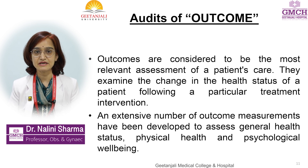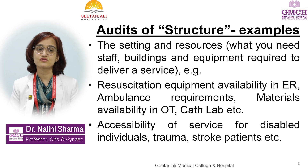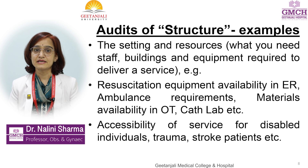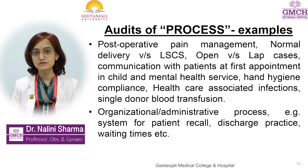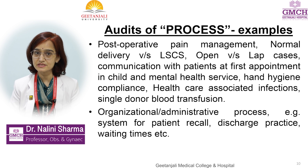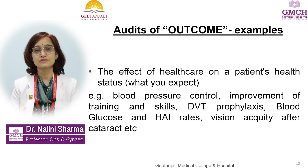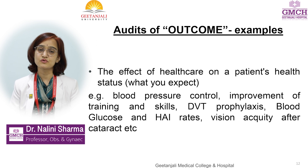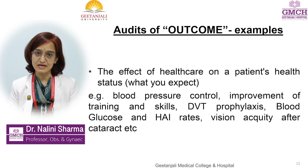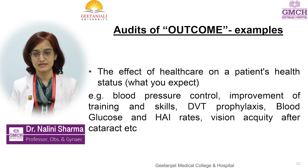Resources and equipment are examples of audits done under the structure heading. Examples of process audits include incidence of laparoscopy versus open surgery for a given procedure, incidence of normal delivery versus caesarean section, or hand hygiene compliance. Examples of outcome audits include post-operative pain relief management, visual acuity after an operation, or patient discharge profile outcomes.